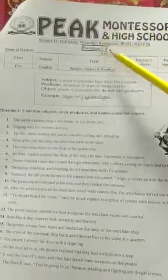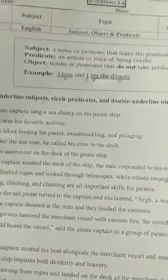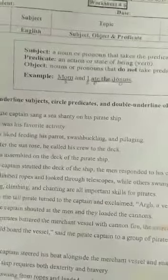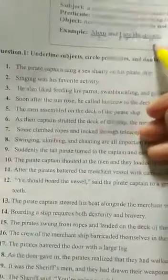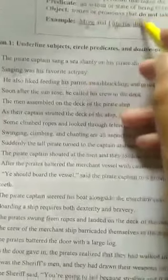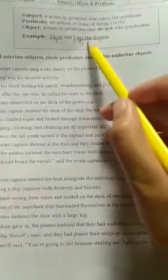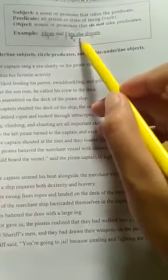Worksheet number six is about subject, object, and predicate. The subject is the 'who' or 'what' of the sentence. The verb is an action word. The object is the person or thing on which the subject is performing the action. The predicate consists of the verb and object together.